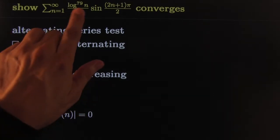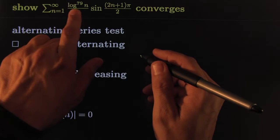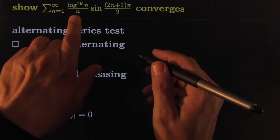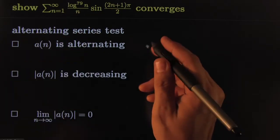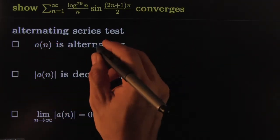Alright, so let's try this one. Log to the 79th power, that's log n times log n 79 times, divided by n times sine of 2n plus 1 over 2 times pi. First, let's check to see that it's alternating.